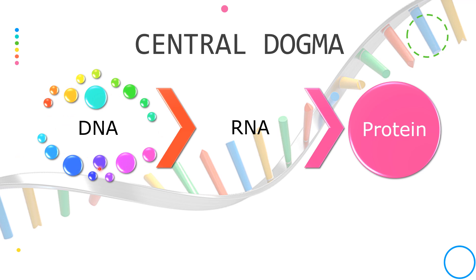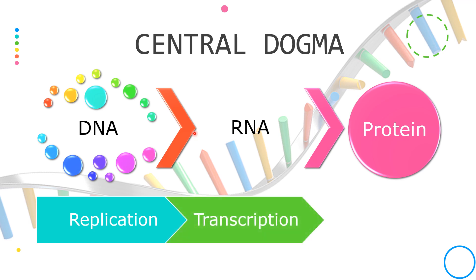The bubbles encircling DNA signify that DNA is a template for its self-replication. The arrow between the DNA and the RNA indicates the RNA synthesis in the process of transcription is directed by the DNA.